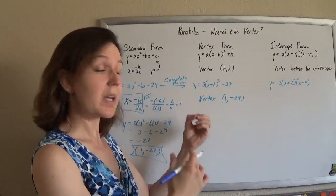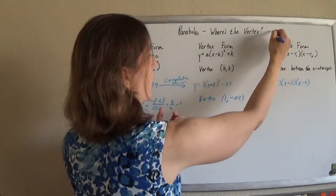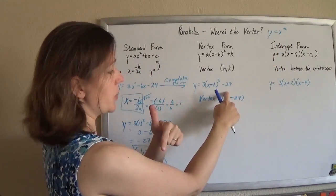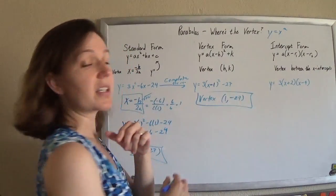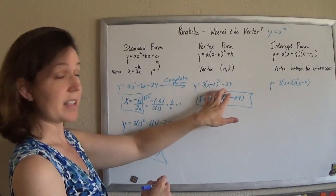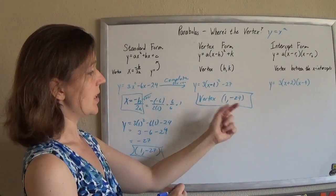That's just a normal transformation of your parent graph, your regular y equals x squared, shifted to the right one and down 27. You get your vertex just like that. So cool. If it's presented in this form, you pluck that vertex straight out.